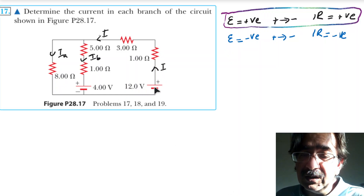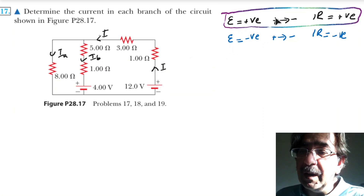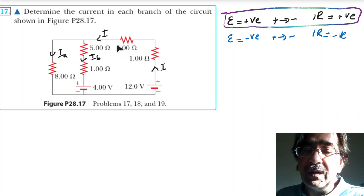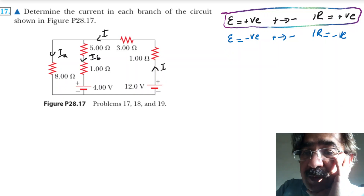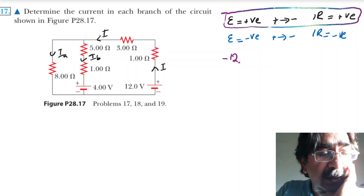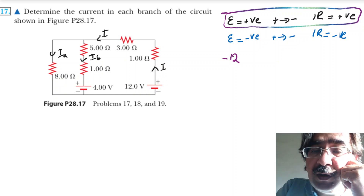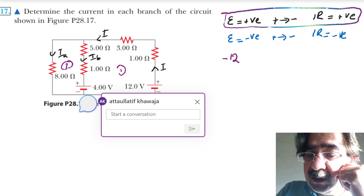Since the current is moving from negative terminal to positive terminal, according to the black ink rule — because this is opposite to positive-to-negative — we consider this voltage as positive, and all voltage drops across the resistances will be positive. So negative to positive is minus. There will be two loops: this is loop one and this is loop two.